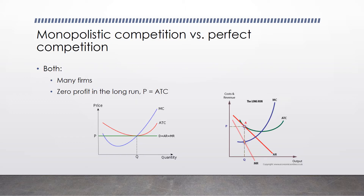A lot of this was covered in the last video, but looking at these two together: they're similar in that they both have many firms. In the long run, they both earn zero economic profit because they charge a price equal to average total cost. On the left is a perfectly competitive firm in long run equilibrium; on the right, a monopolistically competitive firm in long run equilibrium — both showing price equal to average total cost, zero economic profit.